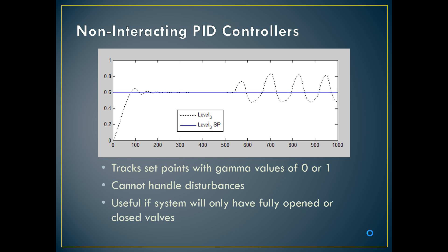The first scenario is non-interacting PID controllers. You could tune these PID controllers really well if your gamma valve was either zero or one. As you see in the first half of that graph, it tracks perfectly when the gamma value is zero, but then halfway through we add a disturbance and it starts to oscillate out of control. It cannot handle any kind of disturbances.